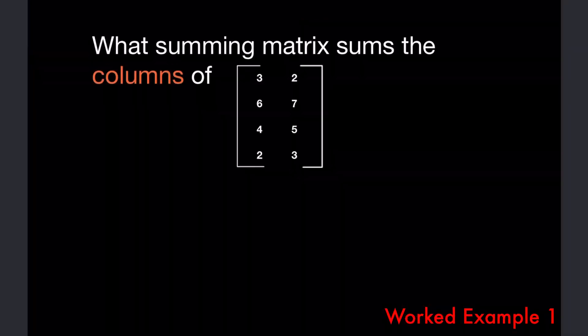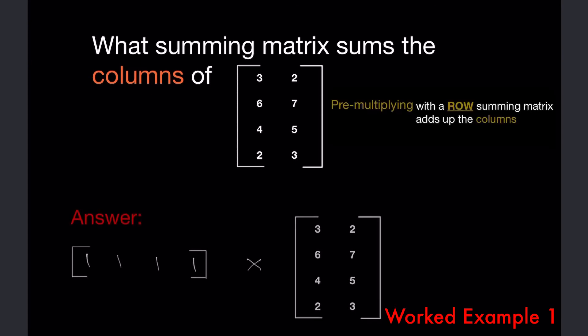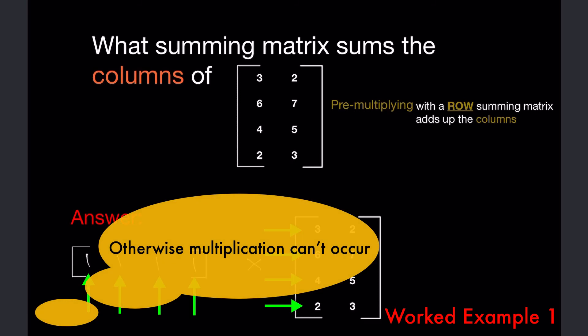Let's look at an example. What summing matrix sums the columns of this matrix? Well, we need to remember pre-multiplying with a row summing matrix will add up the columns. The answer can be seen here. It's important to see that the number of columns in our summing matrix is equal to the number of rows in our original matrix.